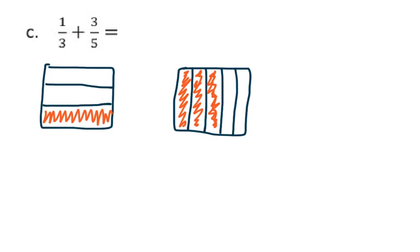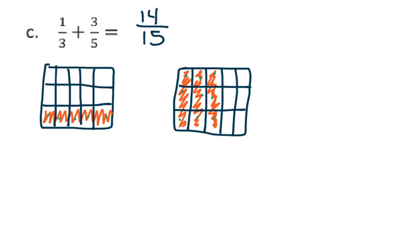Students need to find a common denominator. On this lesson, we're going to do it right on the same model. I'm going to look at my first rectangle and now section it off into fifths as well, and the second one into 3 rows — so both rectangles have the same number of sections. Now I add up the shaded pieces: I have 14, and the denominator is 15 total pieces. So the answer for C — the sum of 1 third plus 3 fifths — is 14 fifteenths.